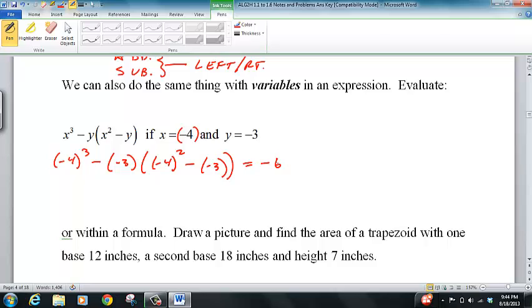Negative sixty-four plus three times sixteen. Sixteen plus three is nineteen, three times nineteen is fifty-seven, which gives me negative seven.